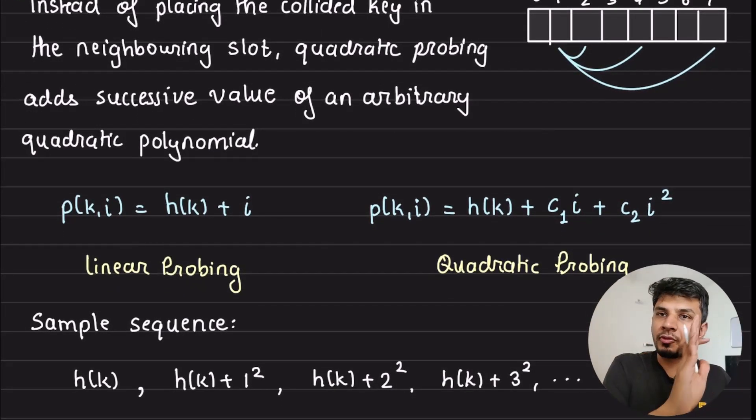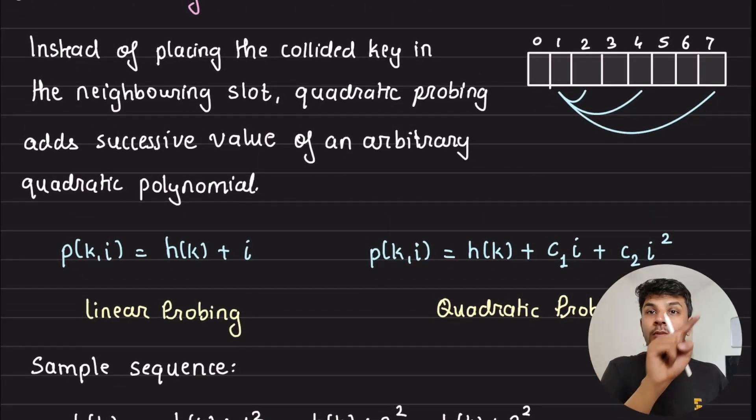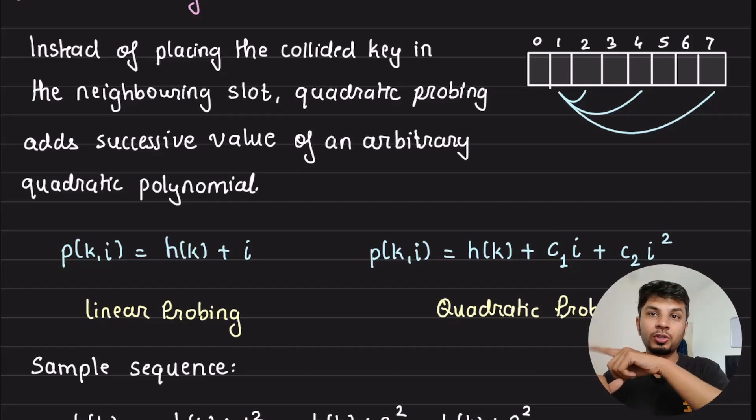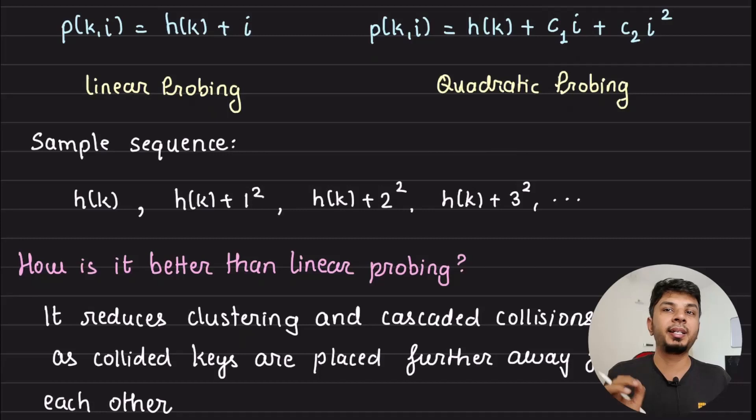As an alternative, what you can do is, instead of going one step at a time, take a quadratic function. For example, p(k,i) is equal to h(k), which is a primary slot, plus c1*i plus c2*i^2. So when you do this, what happens is, instead of going one step at a time, you are taking a quadratic leap. This way, your clusters will not be formed because they would be spaced very well. And think about i square. So 0th attempt would give you the primary slot. Then 1 square is 1, 2 square is 4, 3 square is 9, 4 square is 16. So that's how big of a leap it would be going to take.